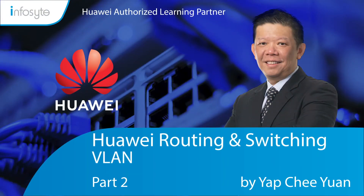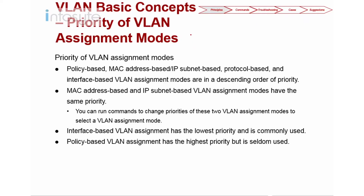Welcome back to Huawei routing and switching elite training. Today's topic is VLAN, Part 2, covering assignment modes. The first priority the switch examines is policy-based assignment. After that comes MAC address or IP subnet, then protocol-based, and finally interface VLAN. These represent the first, second, third, and last priorities respectively.